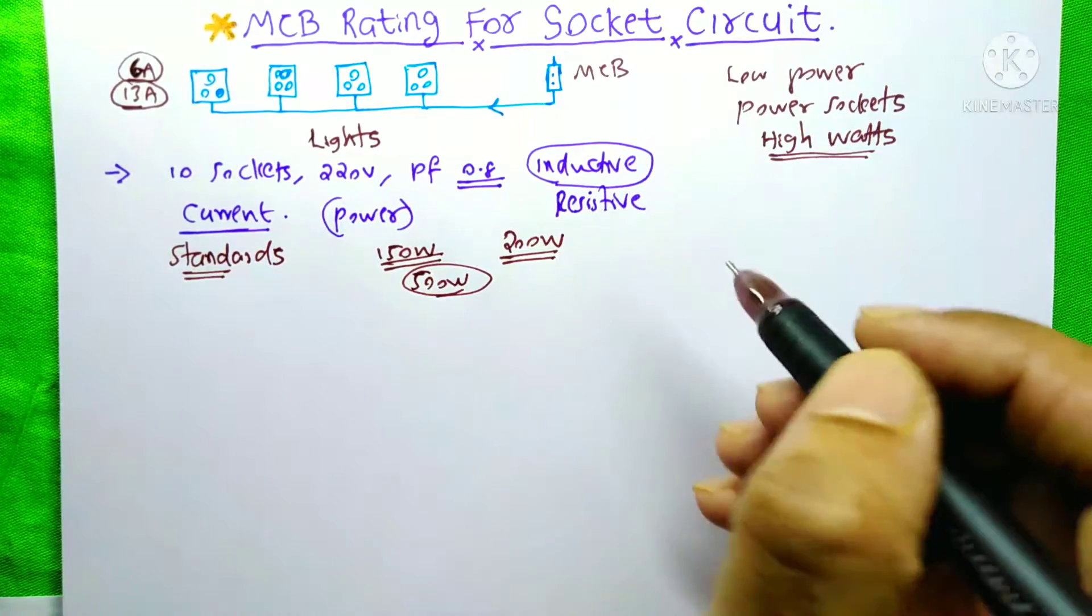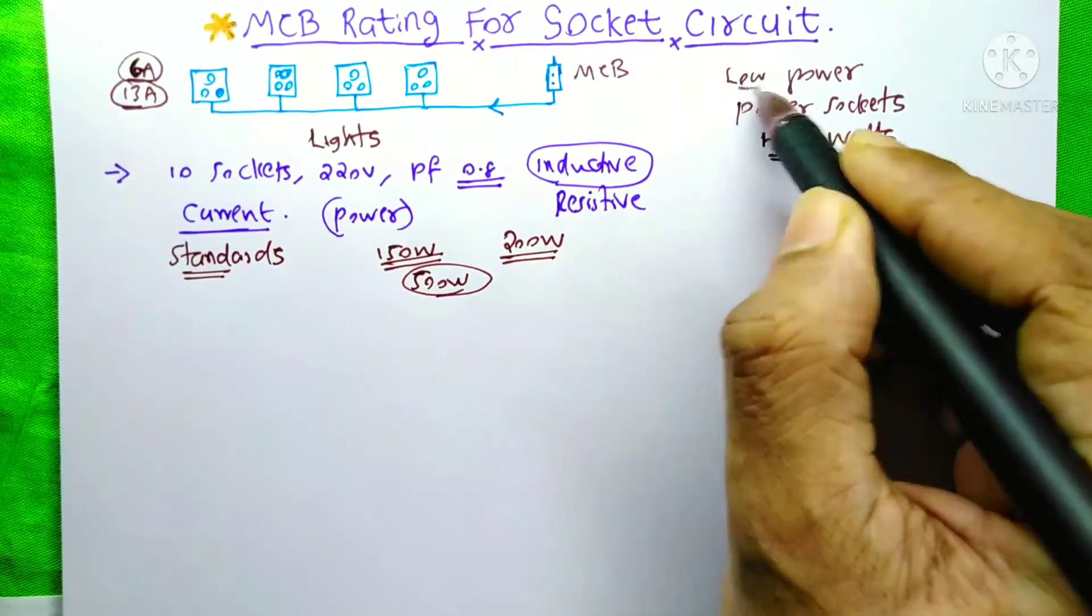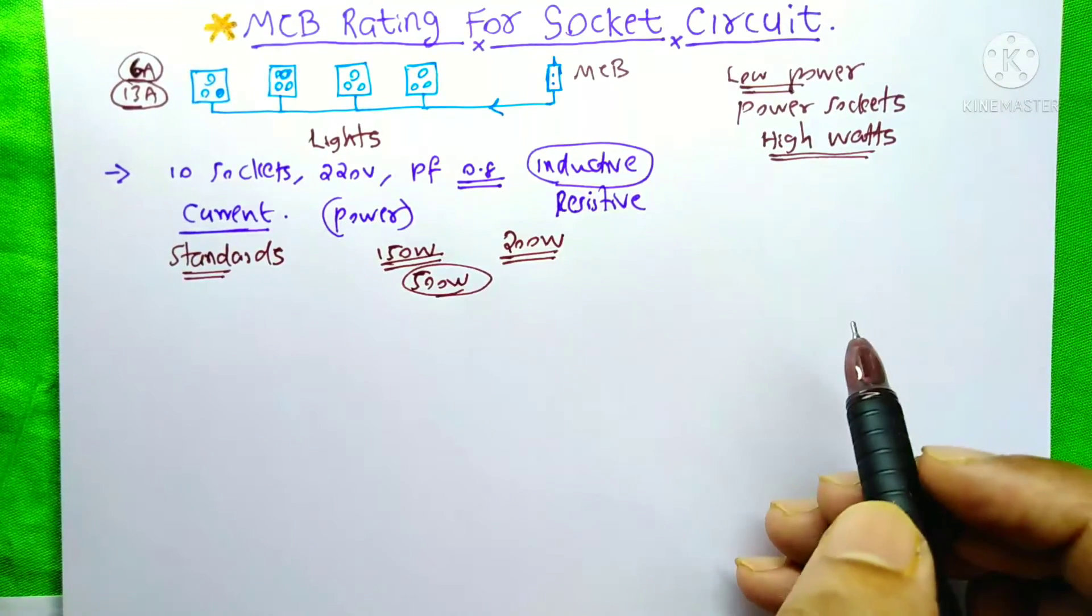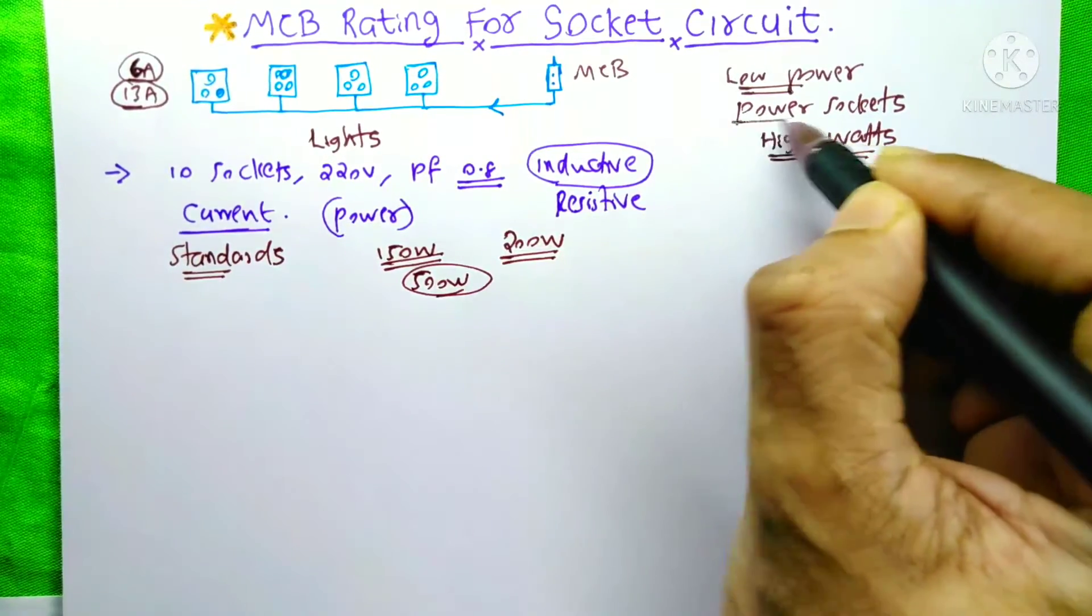Answer is the government allows you to connect only the low power equipment on this one. If you want to connect your high power equipment, you need to connect only it on the power sockets.